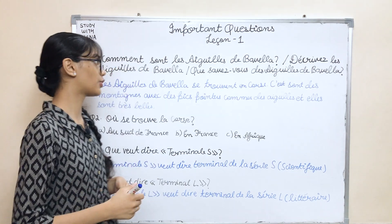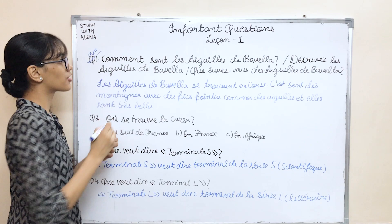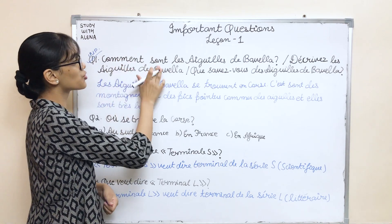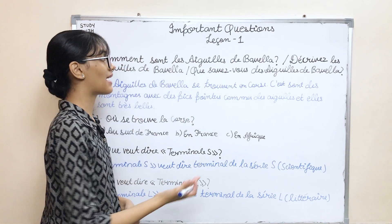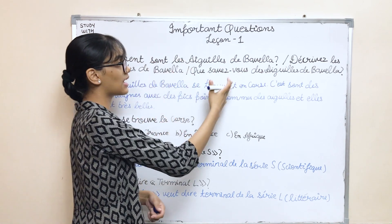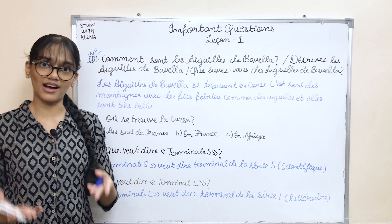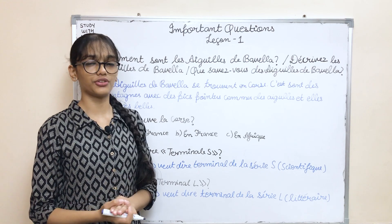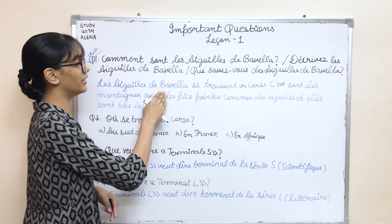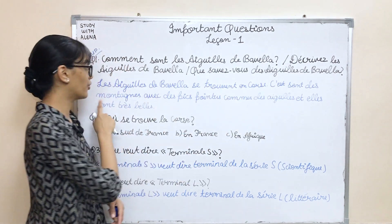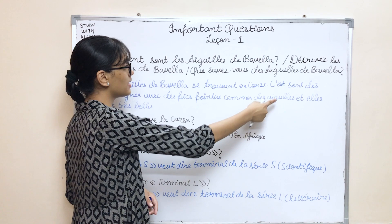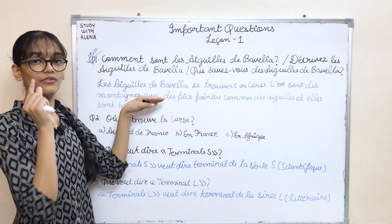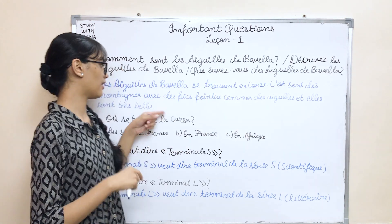Let's start with the first and most important question, because this has been repeated many times in many question papers. The question is: 'Comment sont les aiguilles de Bavella?' It can also be asked as 'Décrivez les aiguilles de Bavella?' or 'Que savez-vous des aiguilles de Bavella?' The answer is the same: Les aiguilles de Bavella se trouvent en Corse. Elles sont des montagnes avec des pics pointus comme des aiguilles et elles sont très belles. They are mountains with peaks pointed like needles and they are very beautiful.